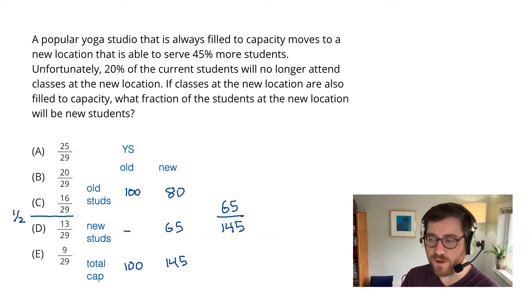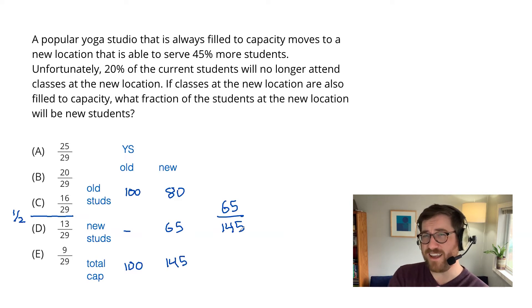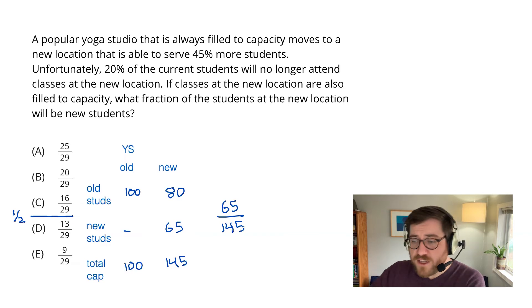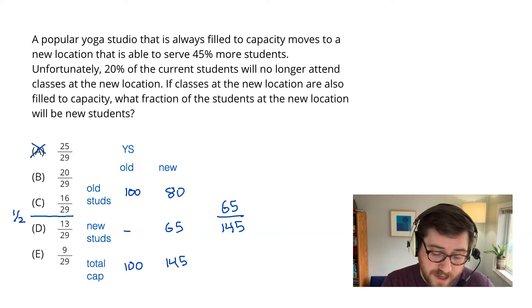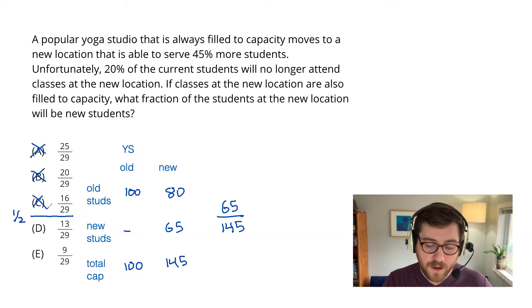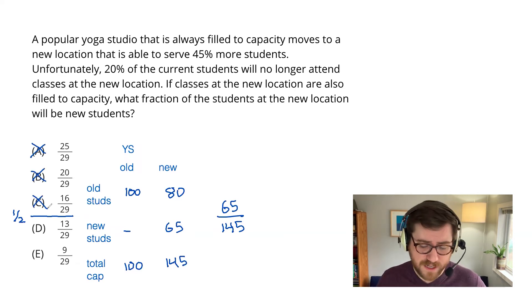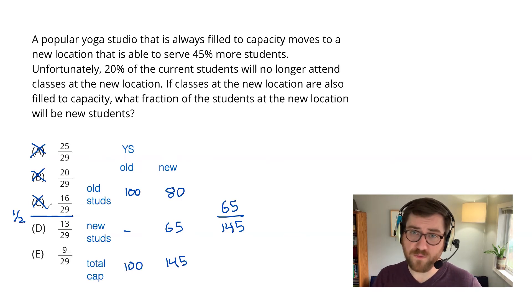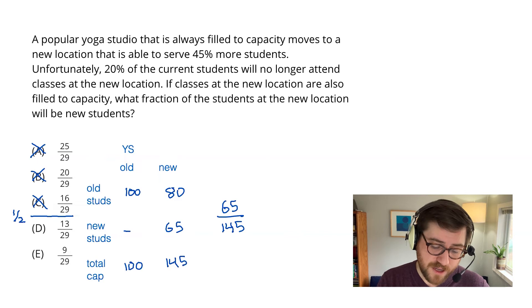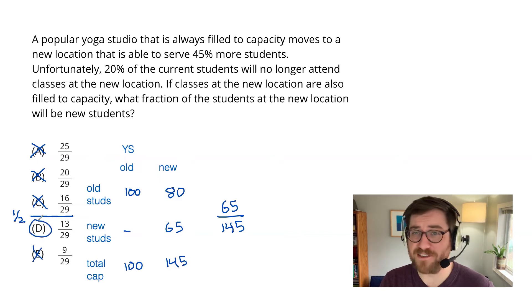Look at it — 65 over 145. That is going to be just a touch less than a half; half of 140 would have been 70. So I know right away that choices A, B, and C, which are all more than a half, can't possibly be right. What do I have left between D and E? I've got a fraction in D that's less than a half but pretty close, and a fraction in E that's just way too small — 65 over 145 is definitely more than a third, which is approximately what E is. So I don't need to do any computation; I can use reasoning to get down to the right answer.